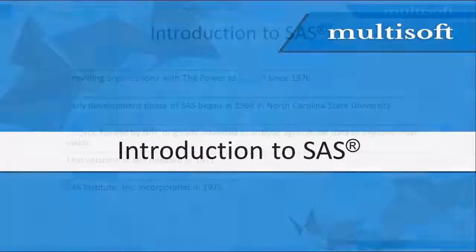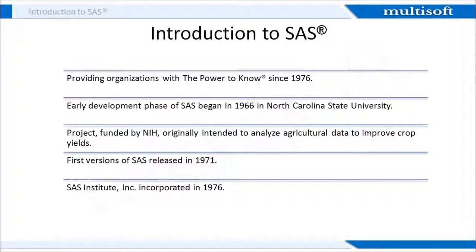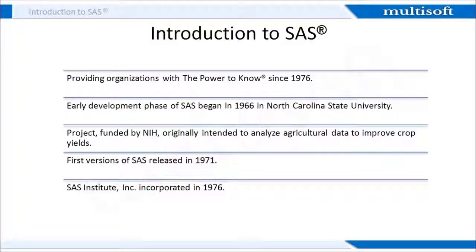Let's begin with an introduction to SAS. The early development phase of SAS began in 1966 at North Carolina State University by Anthony Barr. Barr programmed his analysis of variance and regression software so that it would run on IBM 360 computers. This project was funded by the NIH and was originally intended to analyze agricultural data to improve crop yields. The first versions of SAS were named in the year 1971 in which they were released, used only on IBM mainframes, and had the main elements of SAS programming such as the SAS data step and the most common procedures in the proc step.